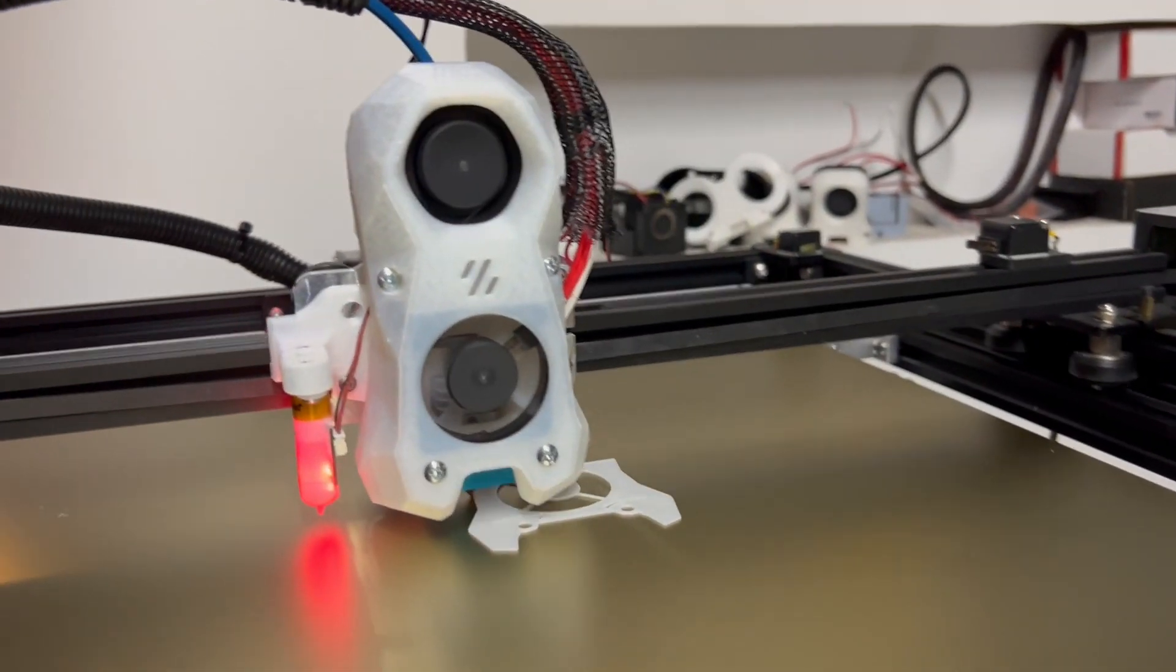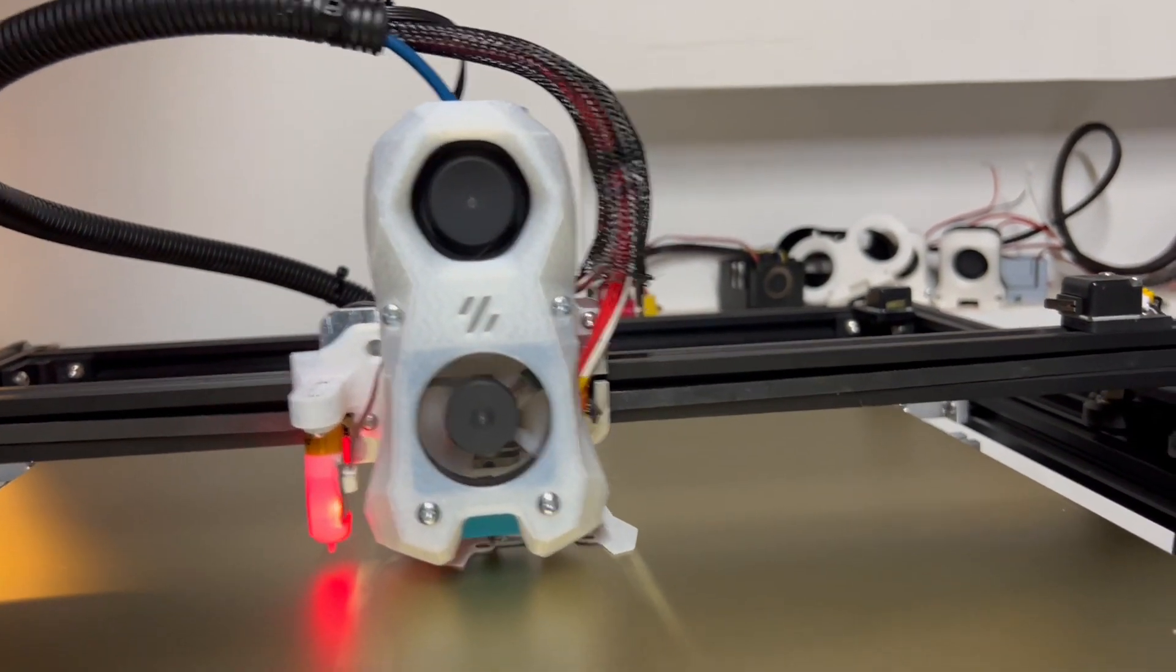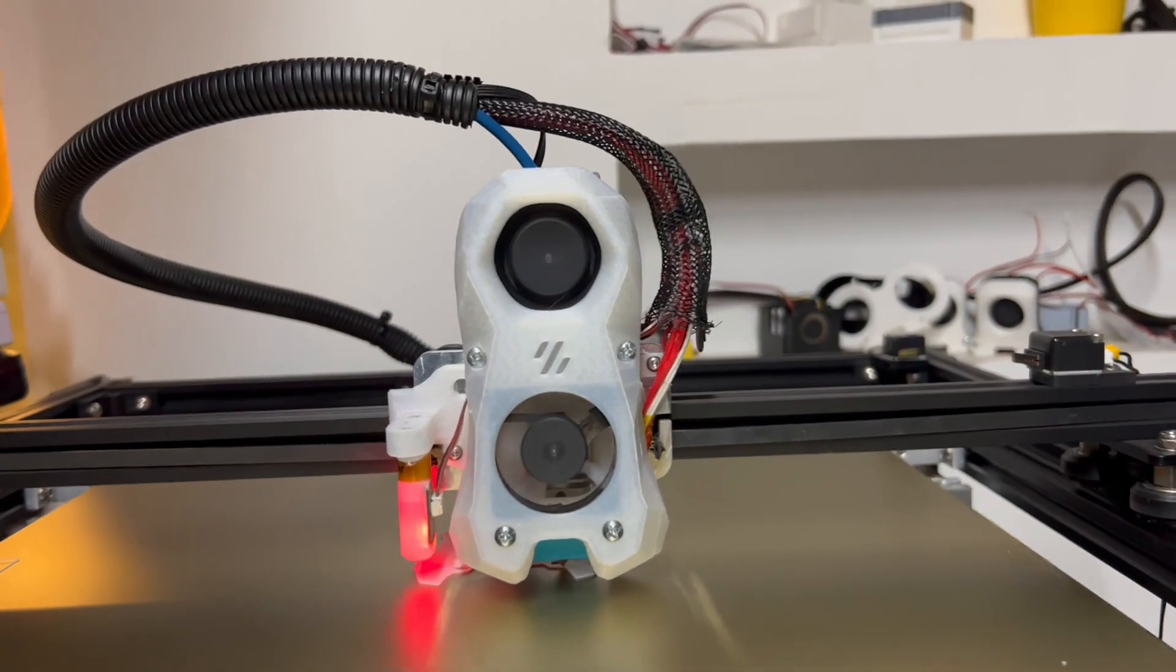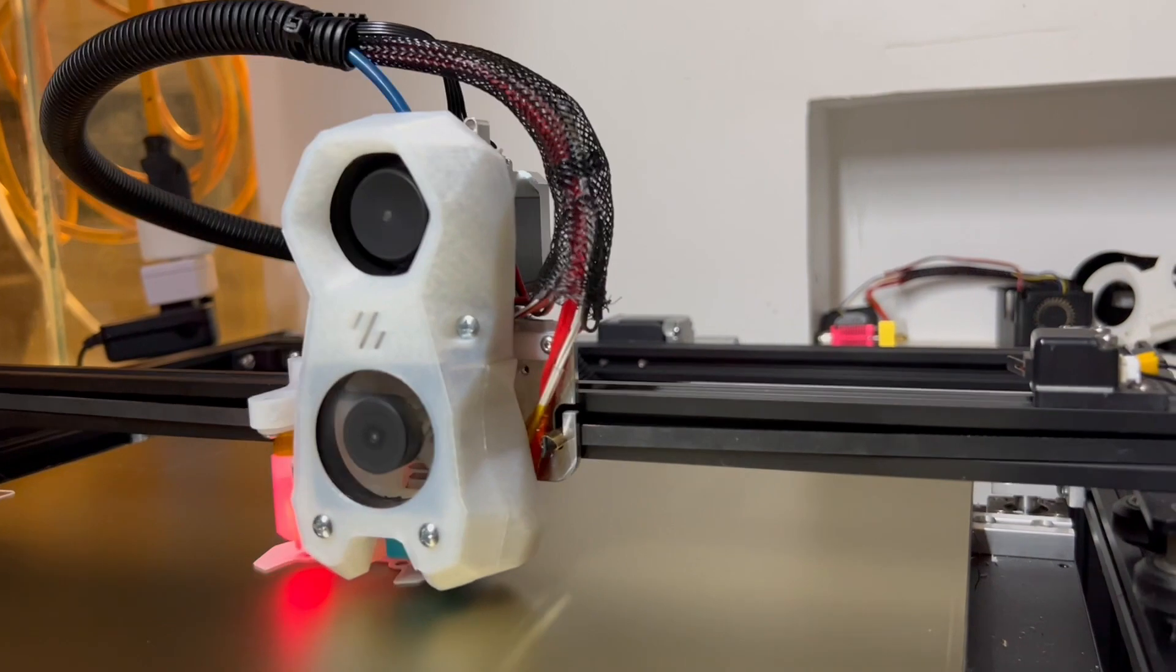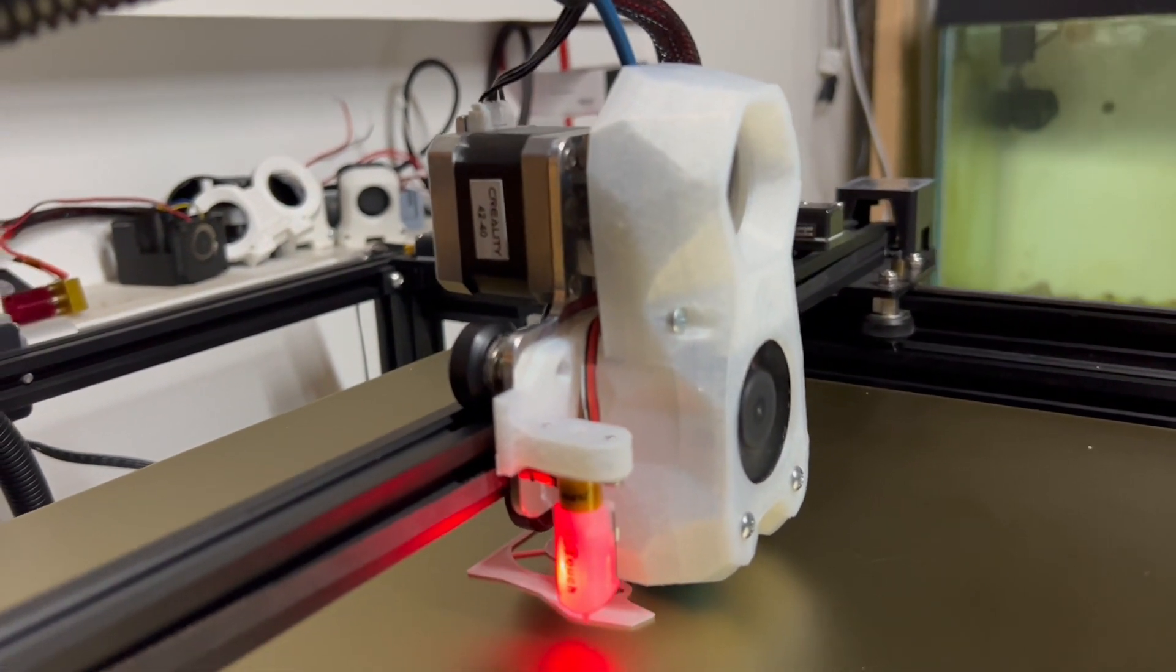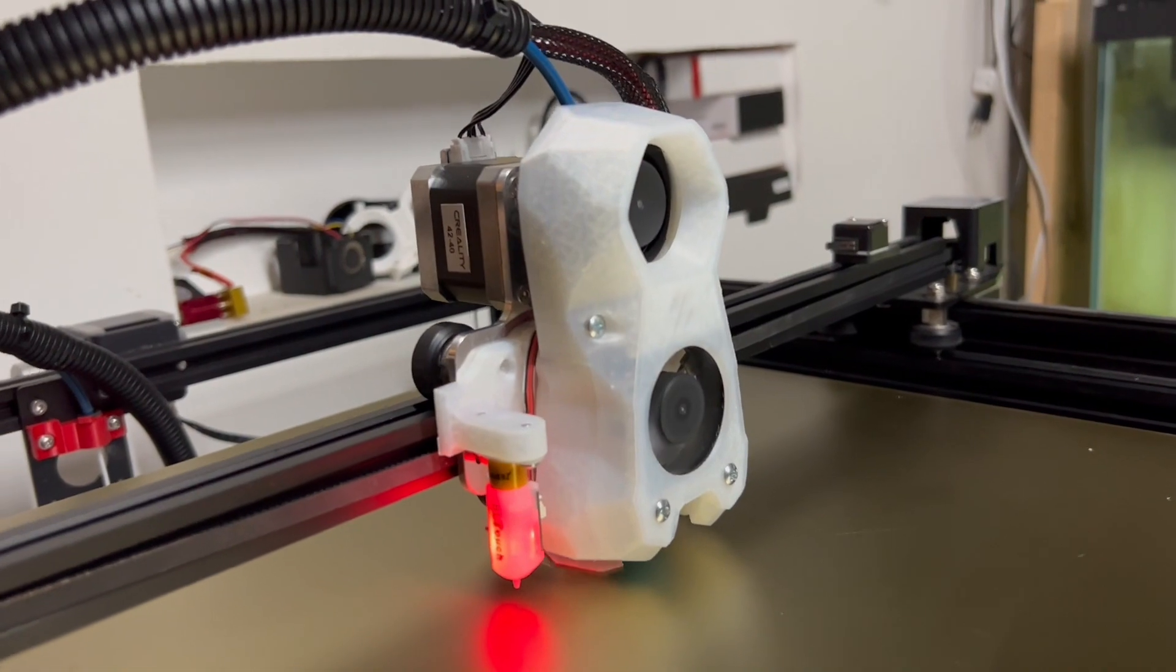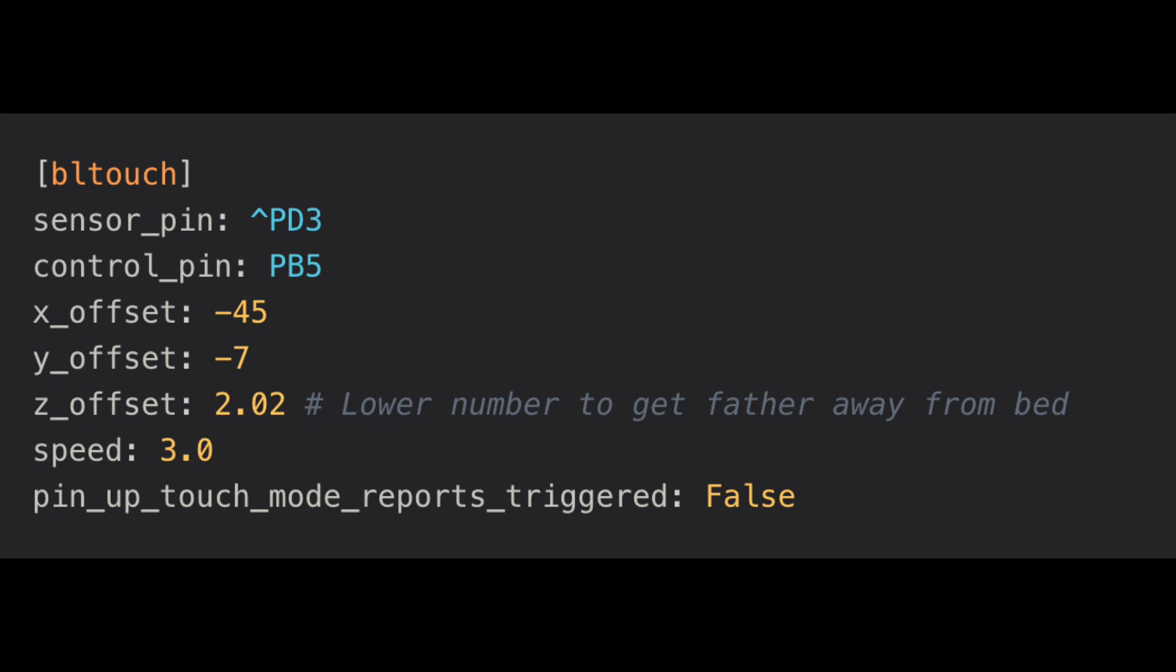All that's left is to put that cover on and tighten up those screws. Once you get those screws tightened and a little bit of wire management, your stealth-y-Swift should be printing like a dream. Hope yours works as well as mine do. Not forget to set your Z offset and your X and Y probe offsets. My X and Y probe offsets are negative 45 X and negative 7 Y, and my Z offset is 2.02. But your numbers may differ, especially your Z offset depending on how you level your bed. Roma Aquatics out.